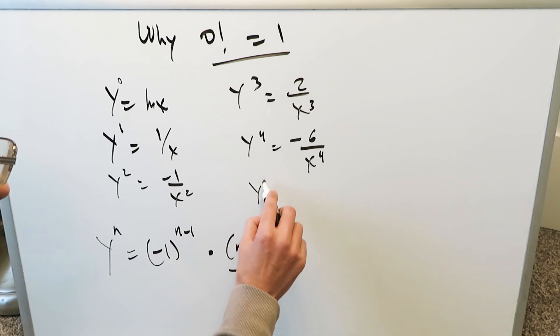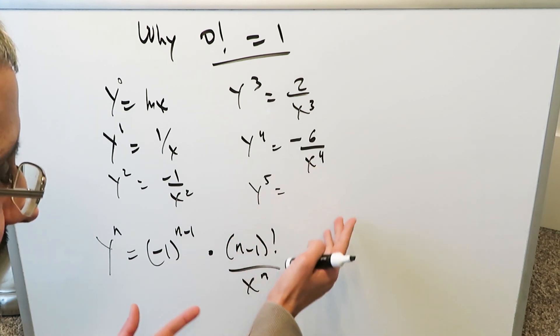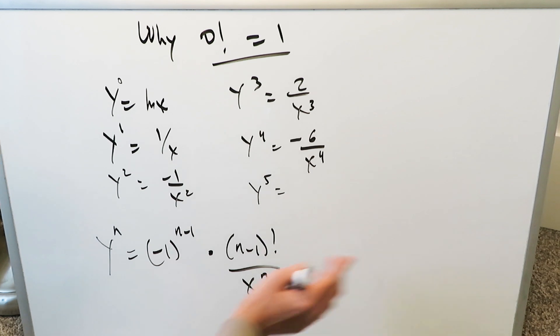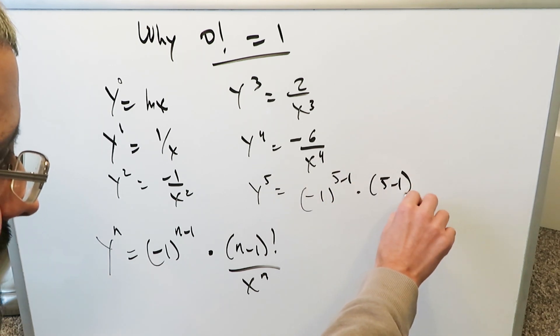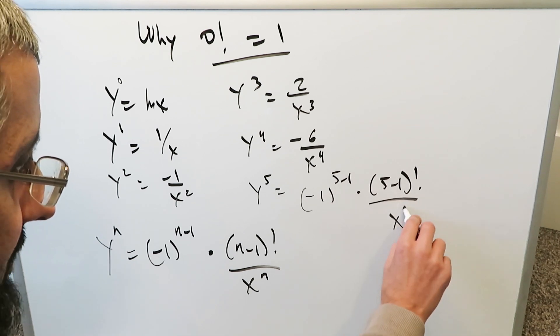If hypothetically I told you find me 5th order derivative or the 10th or the 15th, you can keep playing it along, but you can play with this rule as well. Here, n is equal to 5, you'll have minus 1 to the power of 5 minus 1 times 5 minus 1 factorial divided by x to the power of 5.